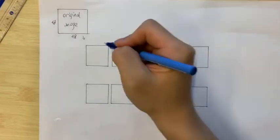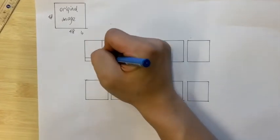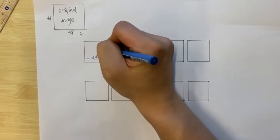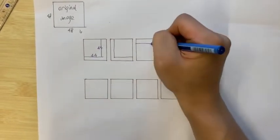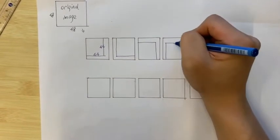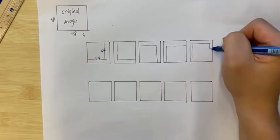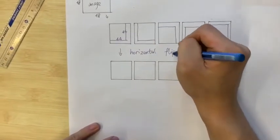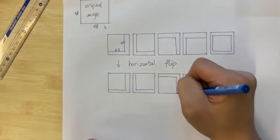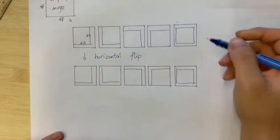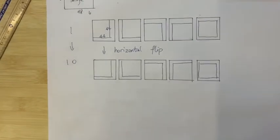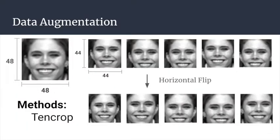The method we use is 10-crop. As the original image size is 48x48, we crop images of size 44x44 from the top left, top right, bottom left, bottom right, and finally in the middle. Then we perform a horizontal flip and do the crop again. Finally, we get 10 images from one original image. Here is a visualization of 10-cropping a specific image. We are now having a 10 times bigger dataset compared to our original dataset.